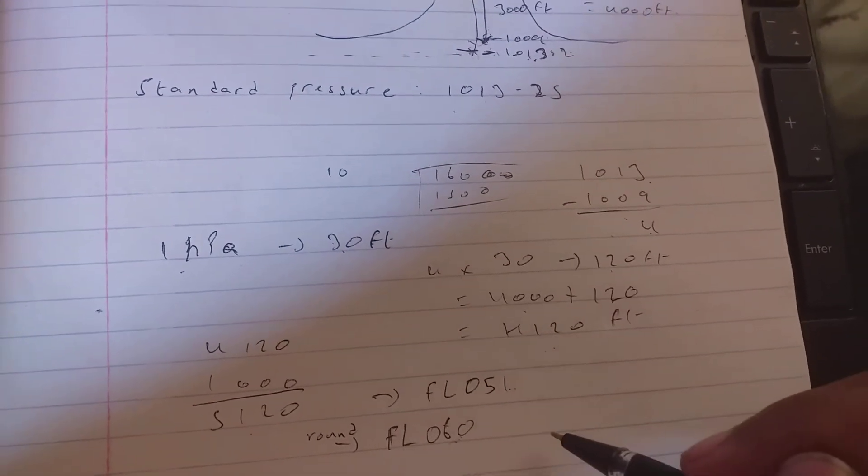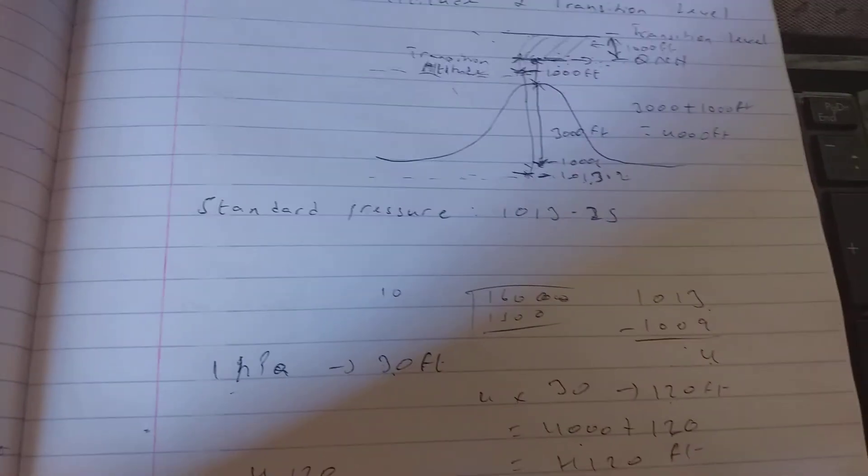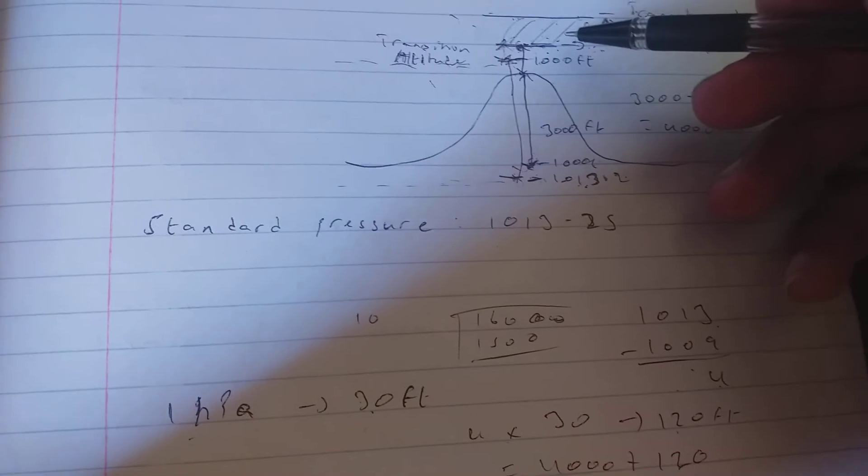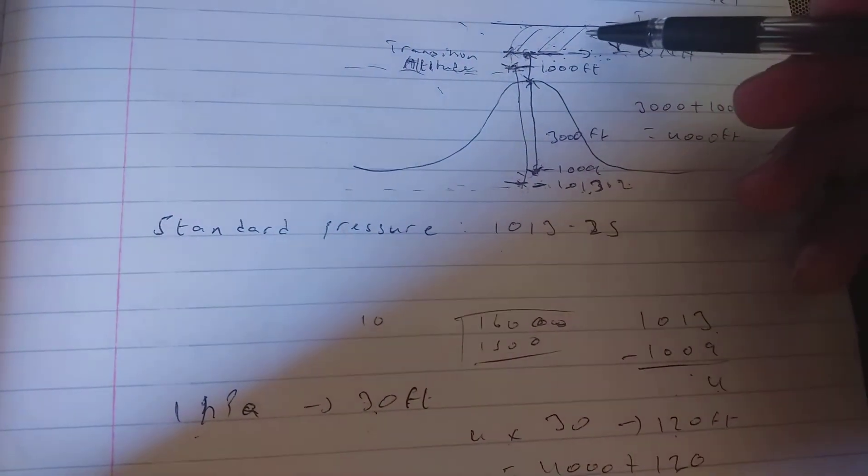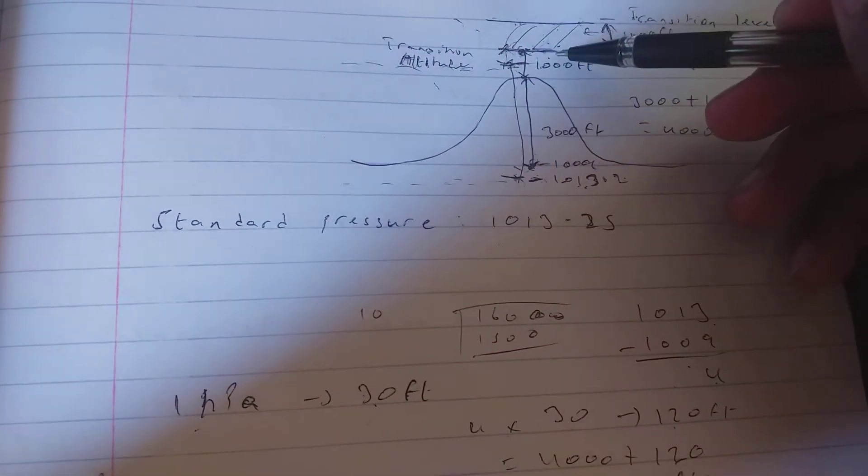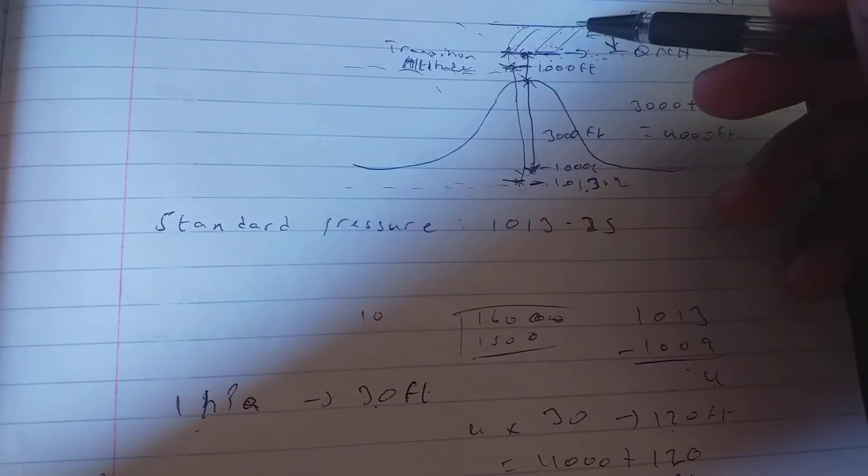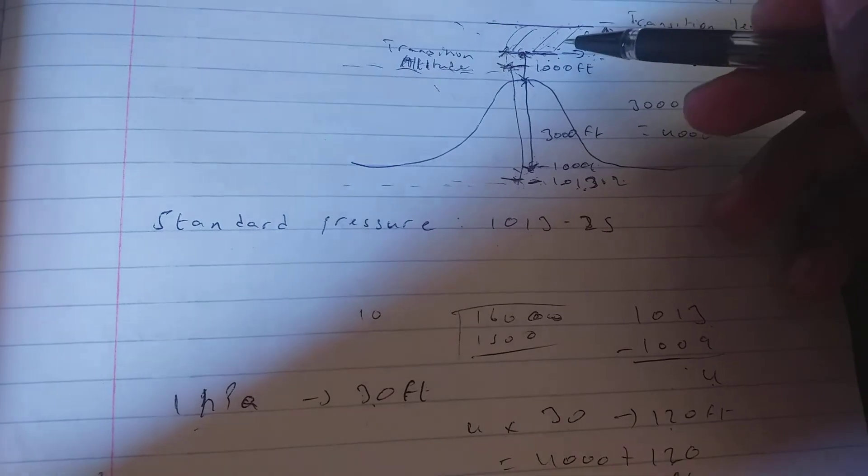I hope this video was helpful. Now for the transition layer, it is the distance between the transition altitude and the transition level.